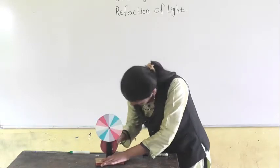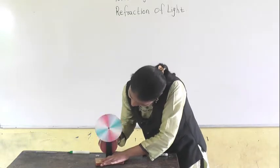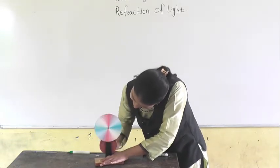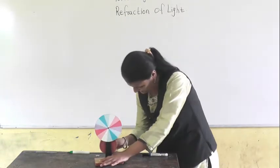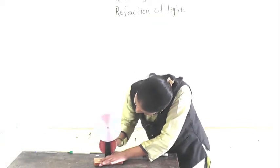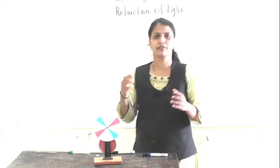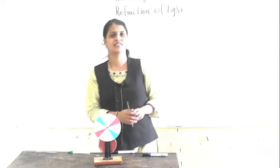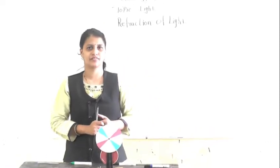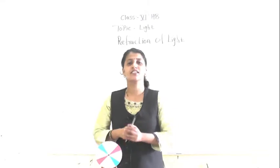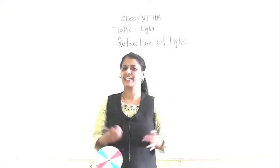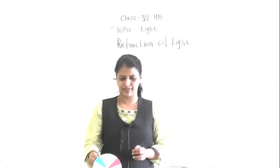Can you see the white color? White color is formed when the seven different colors combine together to form white light.